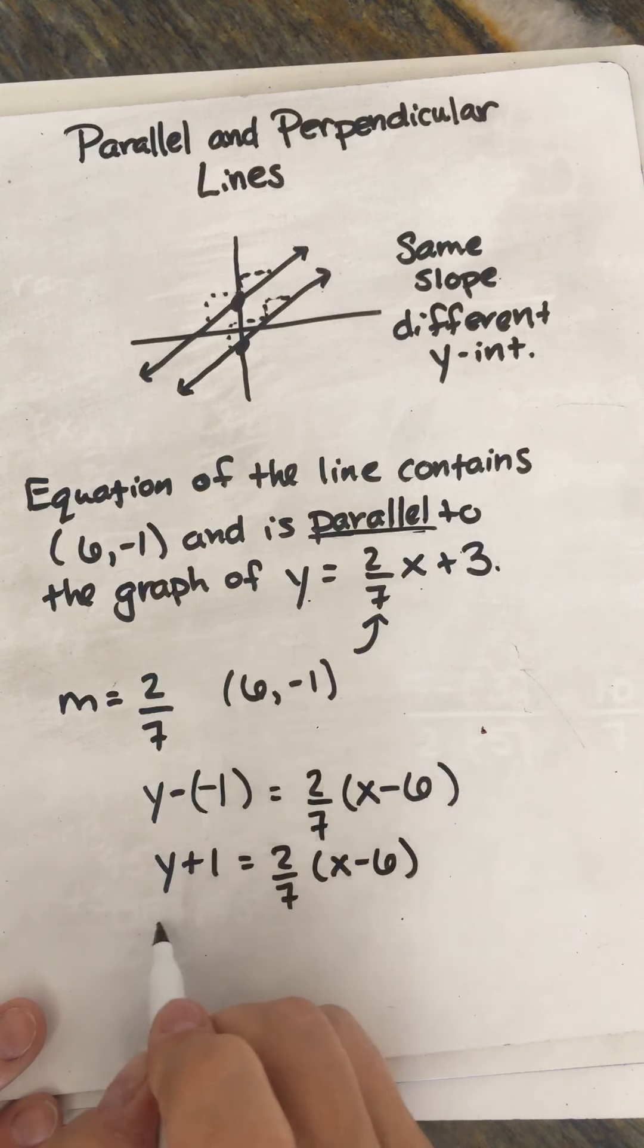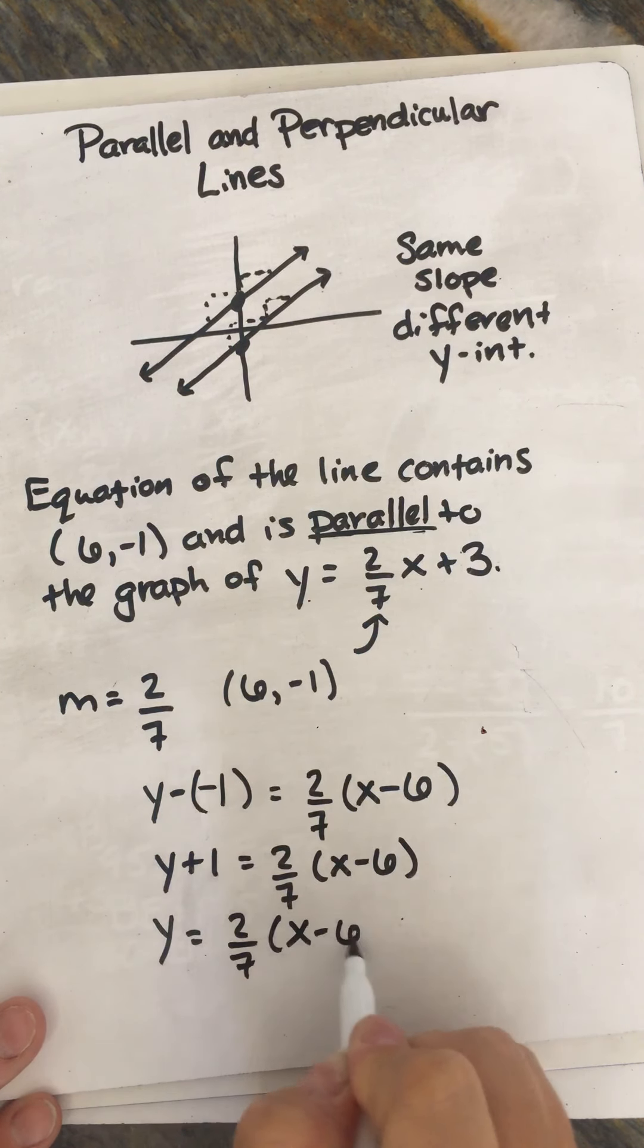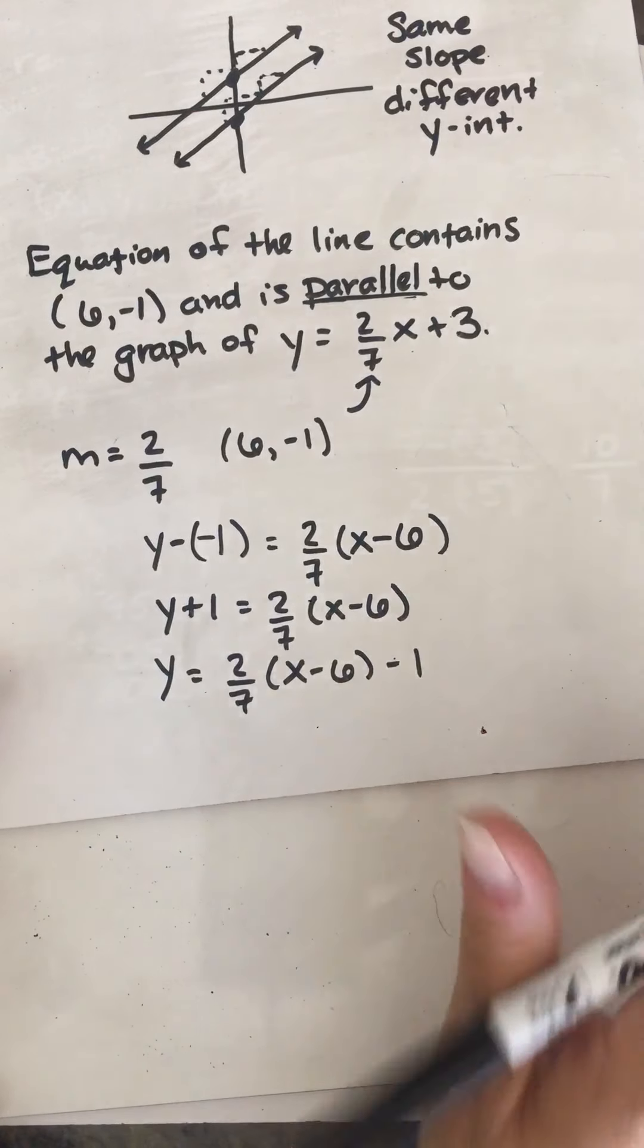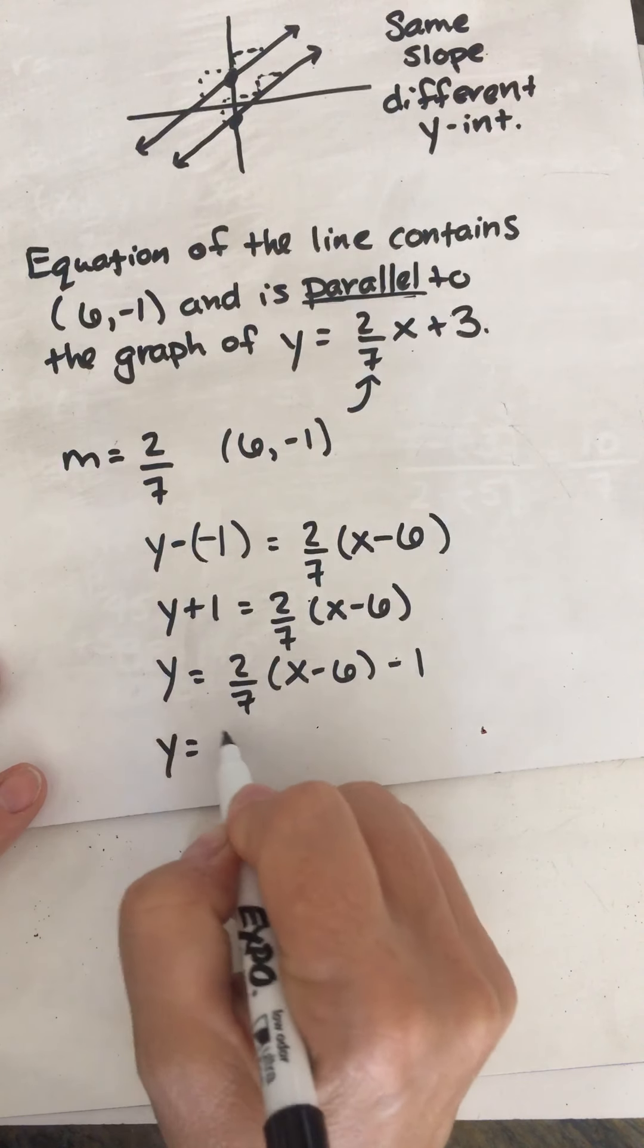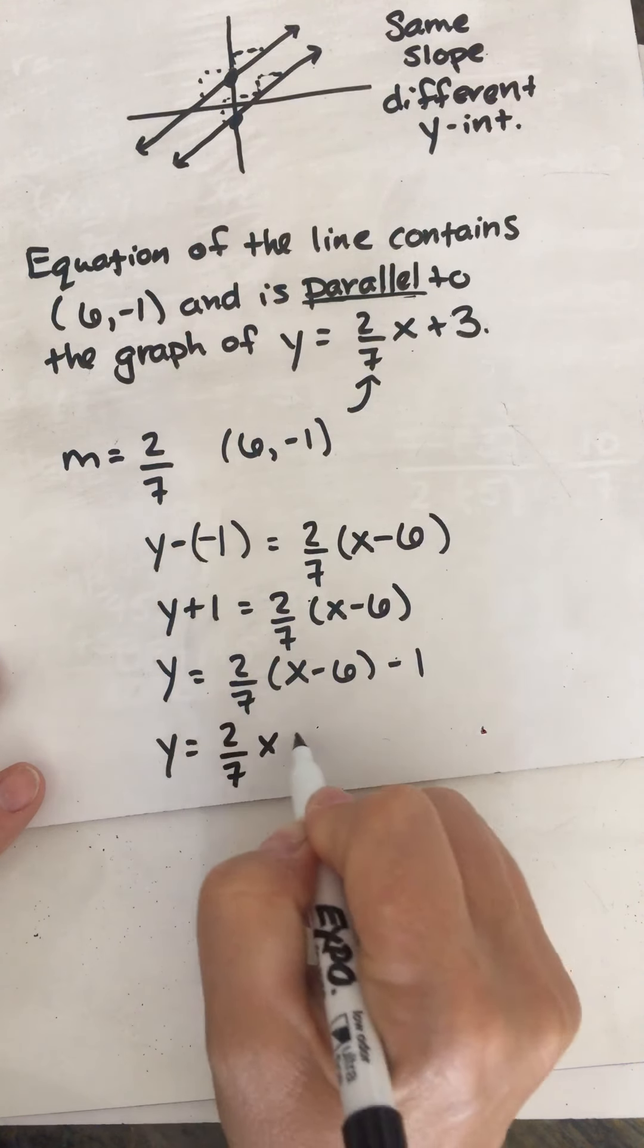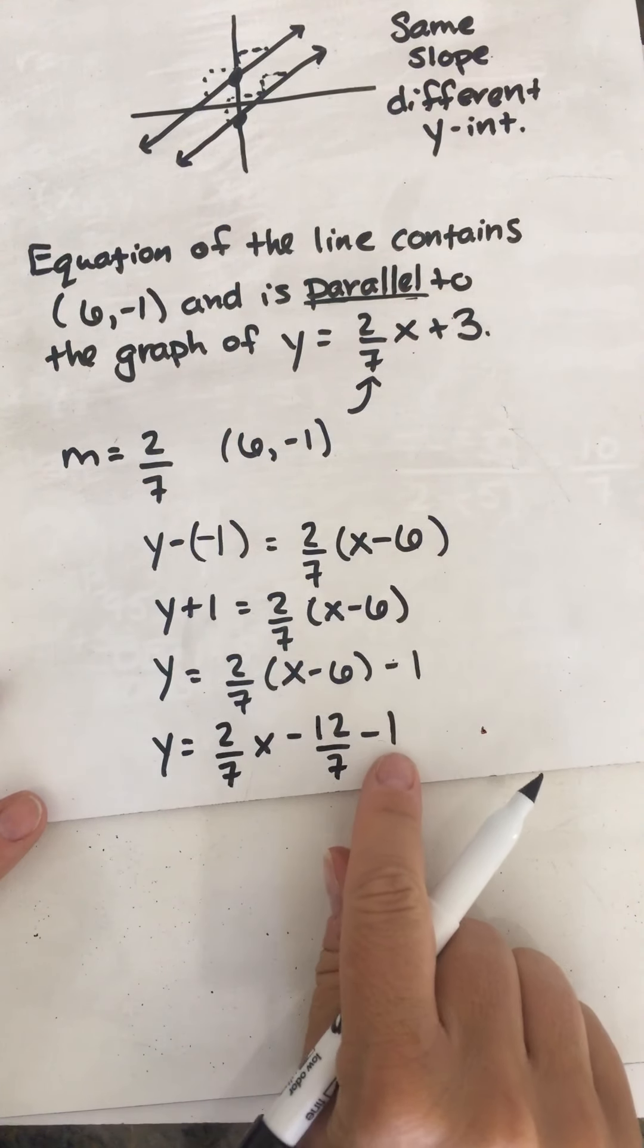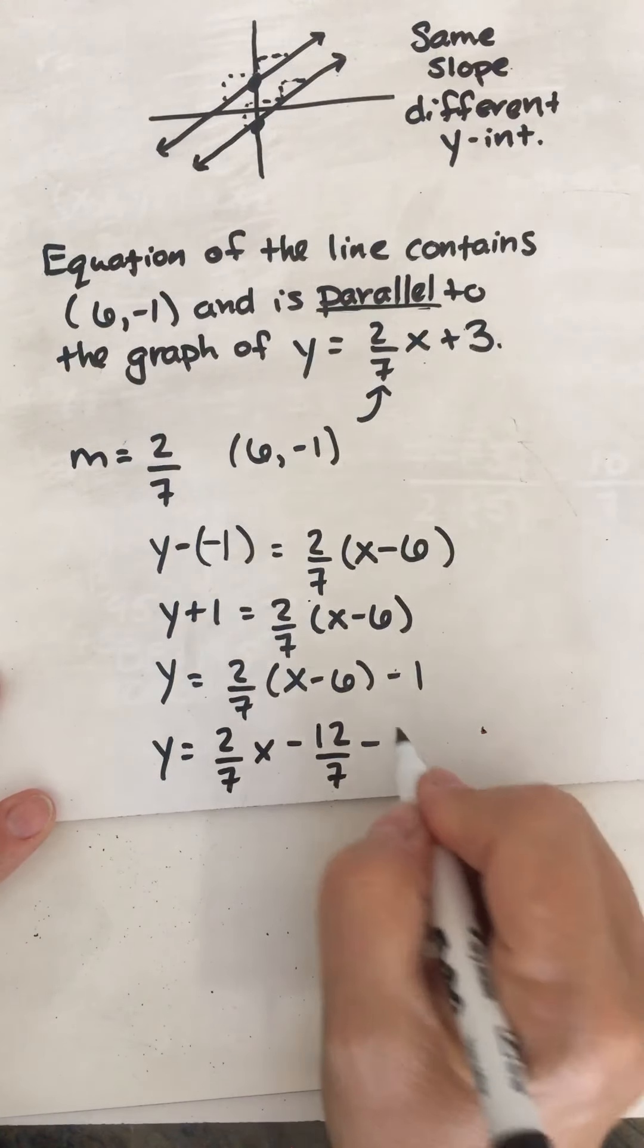So subtracting 1 from both sides, and then distributing the 2/7. I'm going to run out of room. It's okay. Y = 2/7x - 12/7 - 1. And I'm going to take that 1 and change it to 7/7.